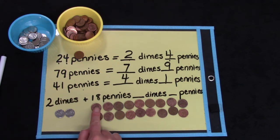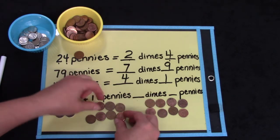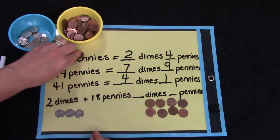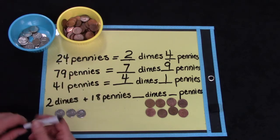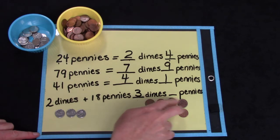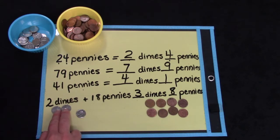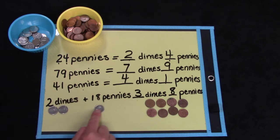We can trade in 2, 4, 6, 8, 10 pennies for 1 dime. And that would give us 3 dimes and 2, 4, 6, 8 pennies. 2 of our 3 dimes are listed here under dimes. And the other dime is this 1 group of 10 in our pennies. 2 plus 1 is 3 dimes and 8 pennies.